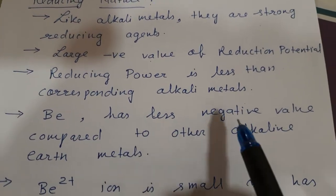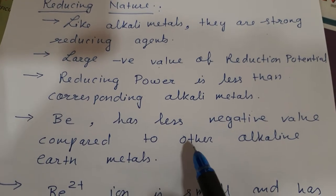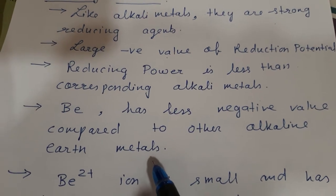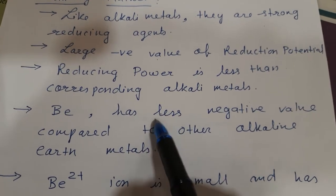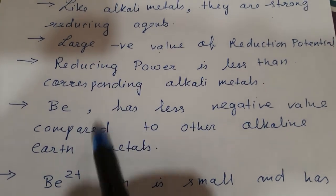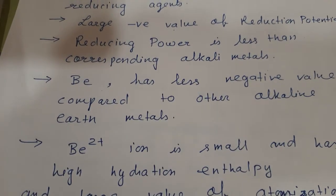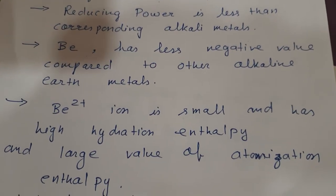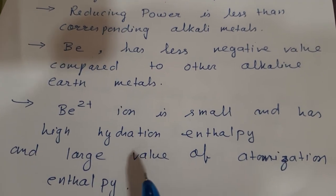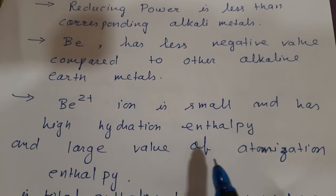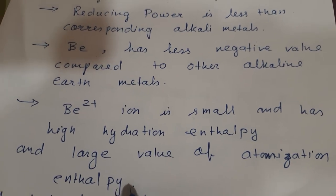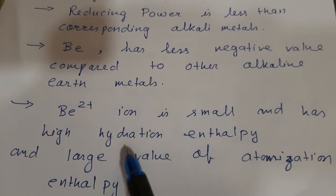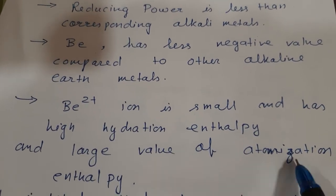Beryllium has a less negative reduction potential value compared to other alkaline earth metals of its group. This is because the Be²⁺ ion is small and has high hydration enthalpy, and also a large value of atomization enthalpy.